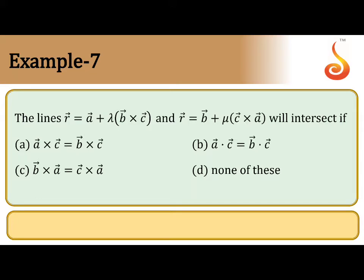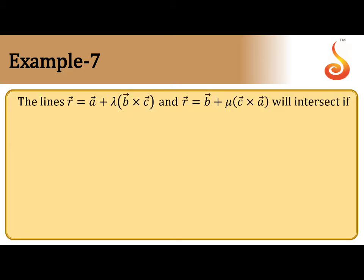The lines r̄ = ā + λ(b × a) and r̄ = b̄ + μ(c × a) will intersect. What is the condition? So now let us take this as r̄ = a1 + λb1 and r̄ = a2 + λb2.